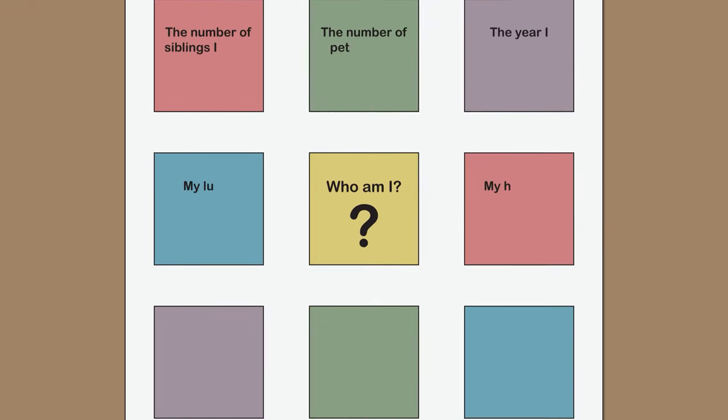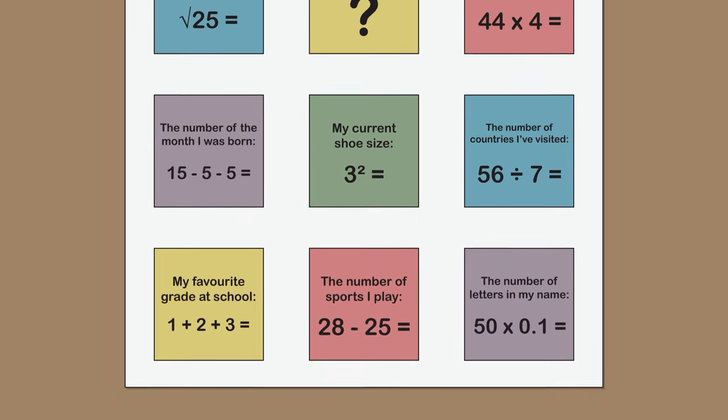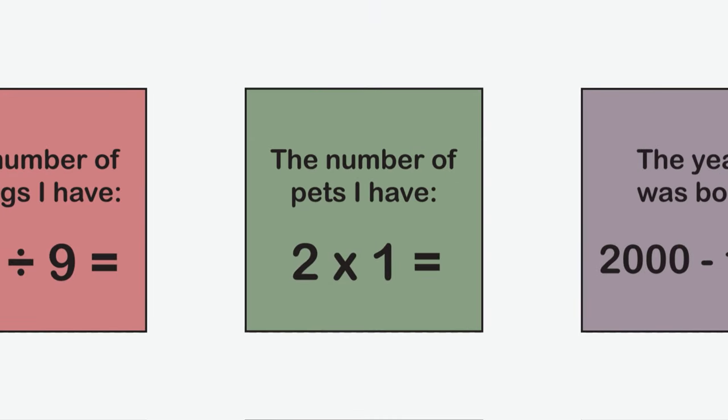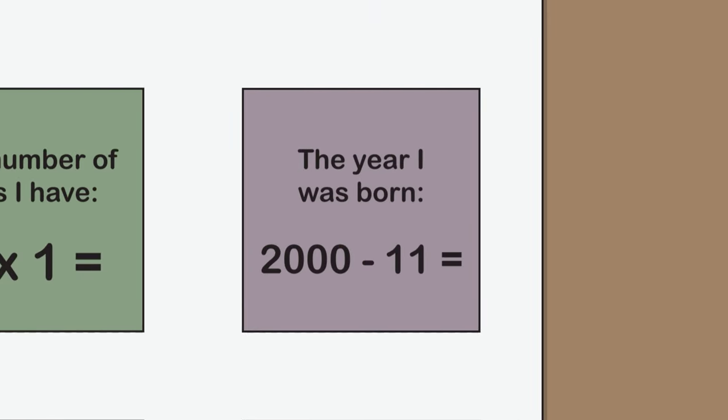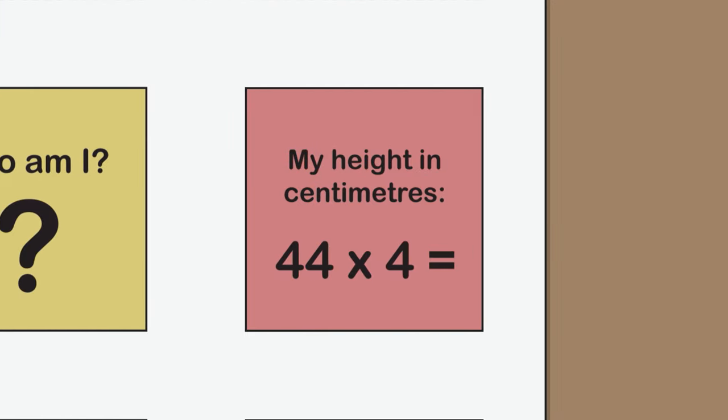On the rest of the sticky notes write down a clue and a number sentence on each one. Examples of clues might include the number of pets I have, the year I was born, my lucky number or my height in centimeters.